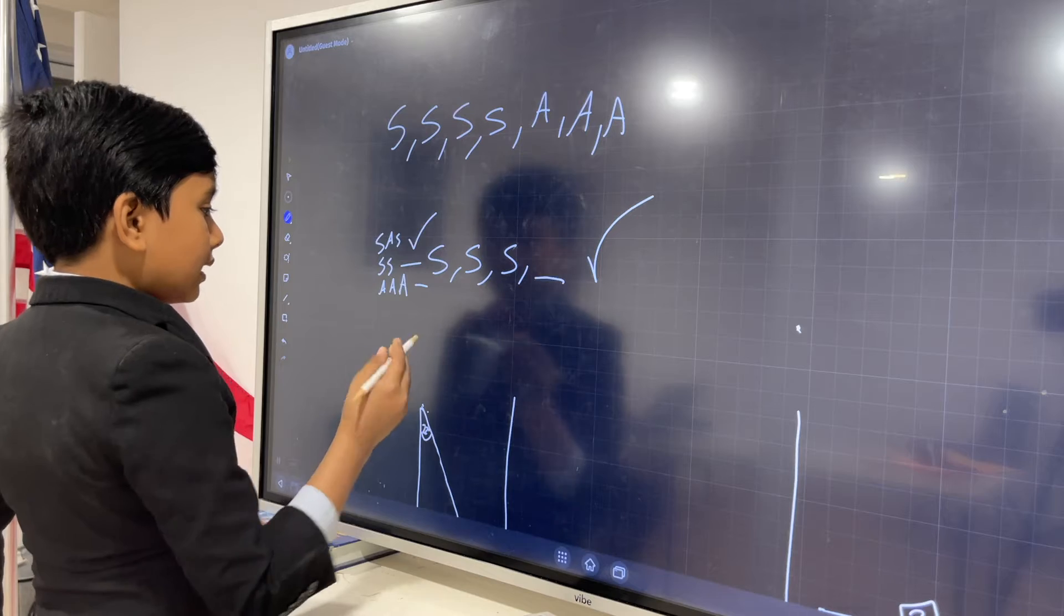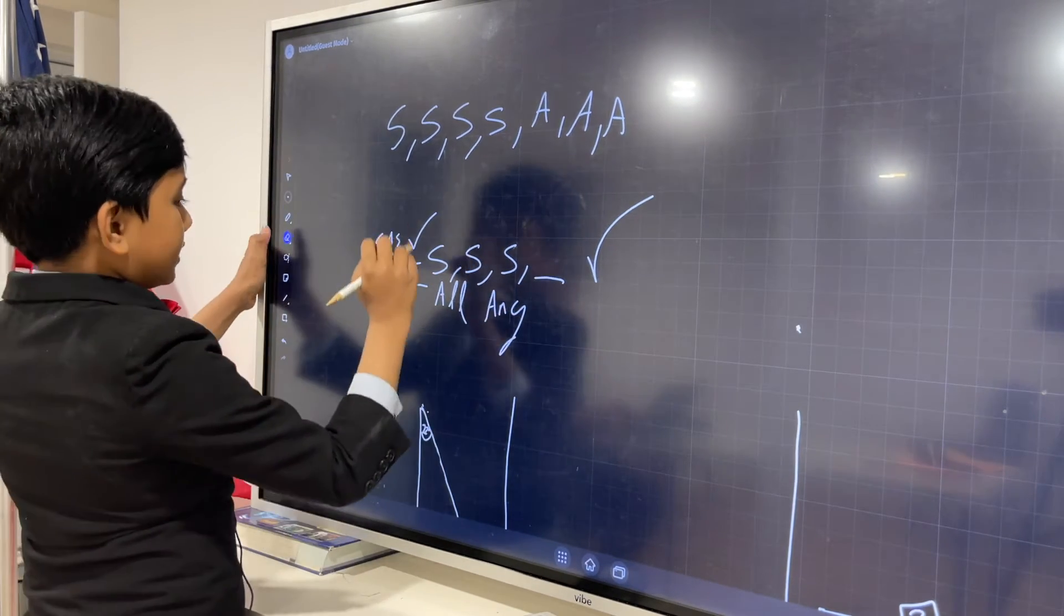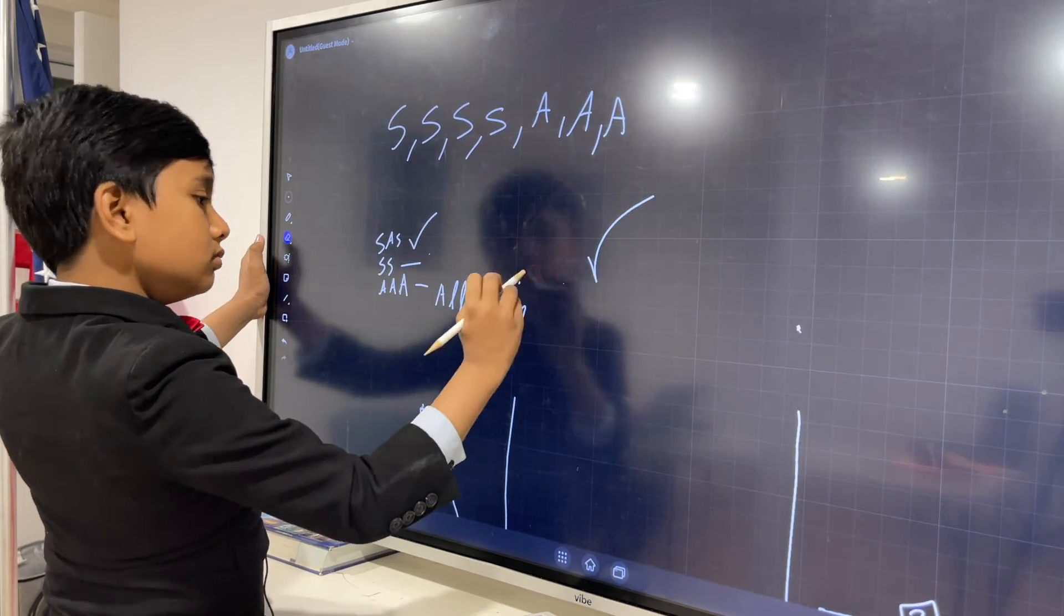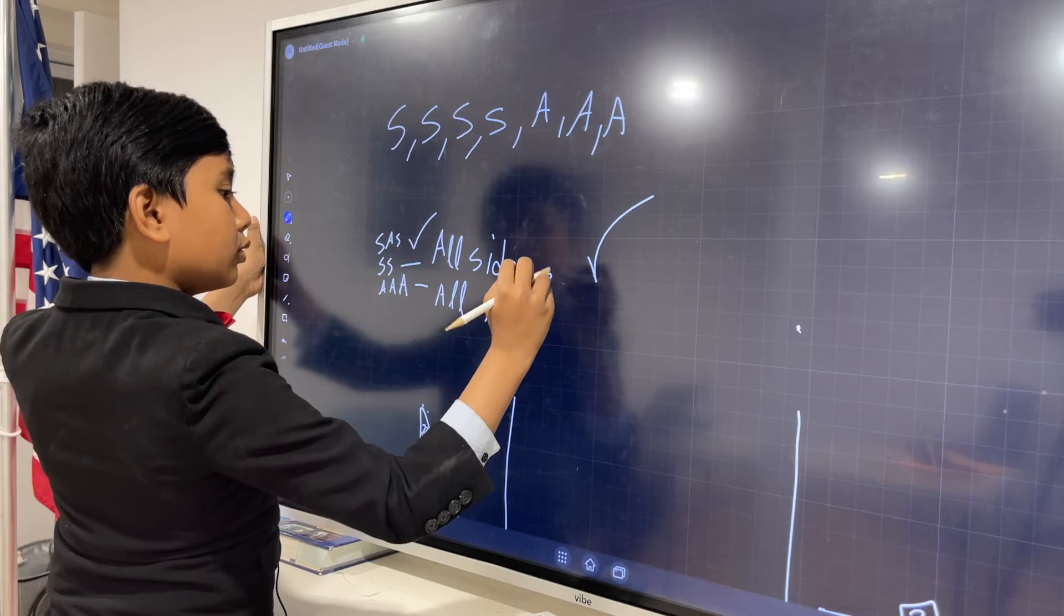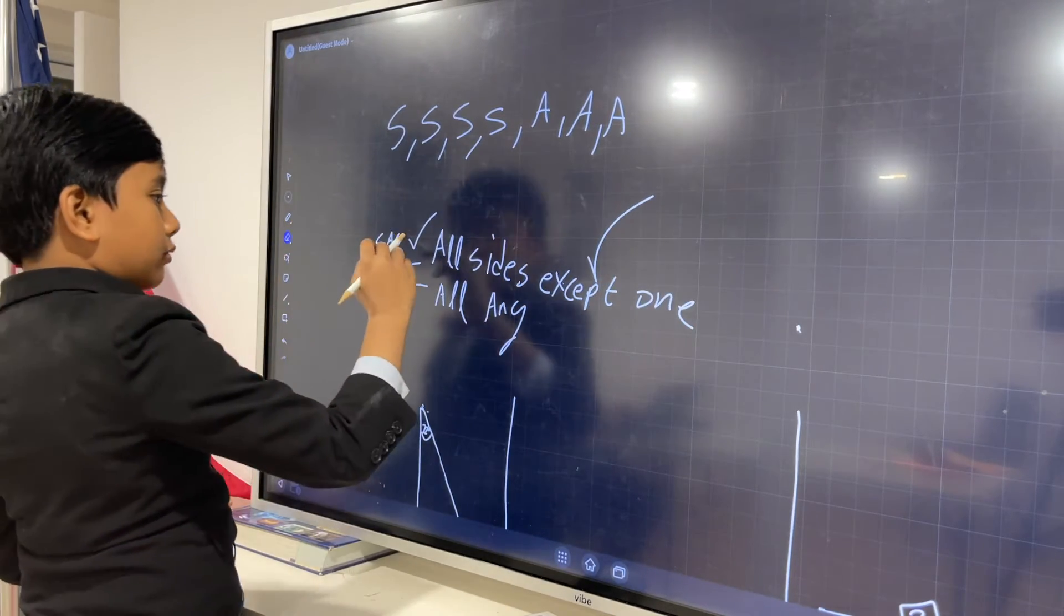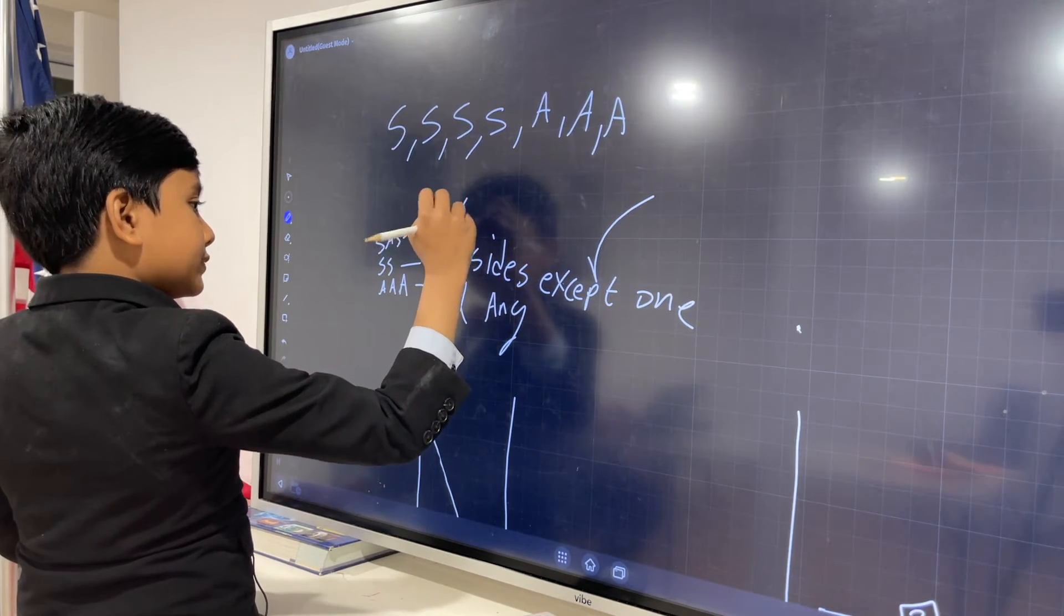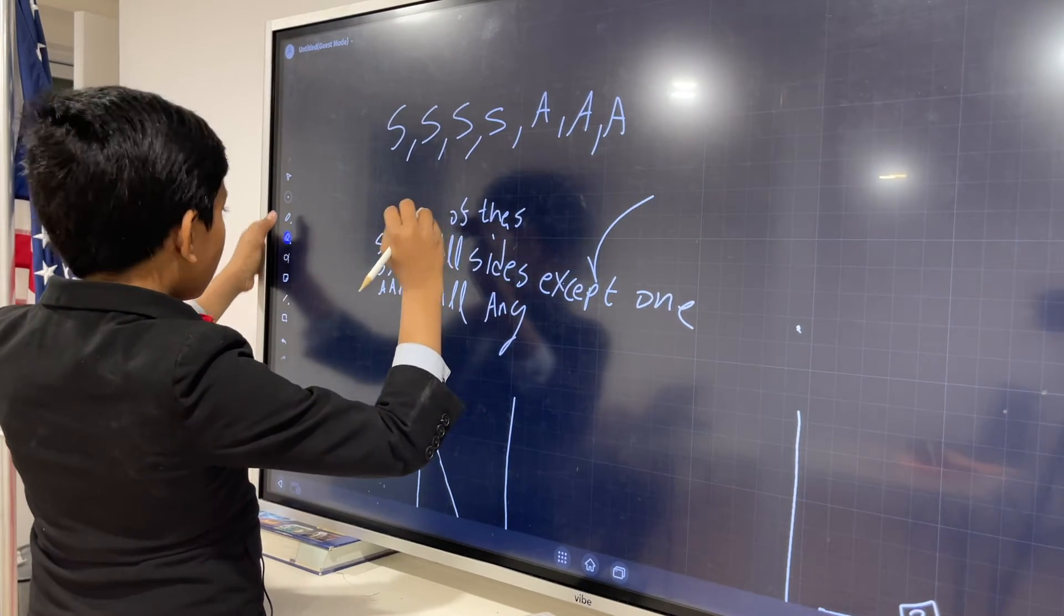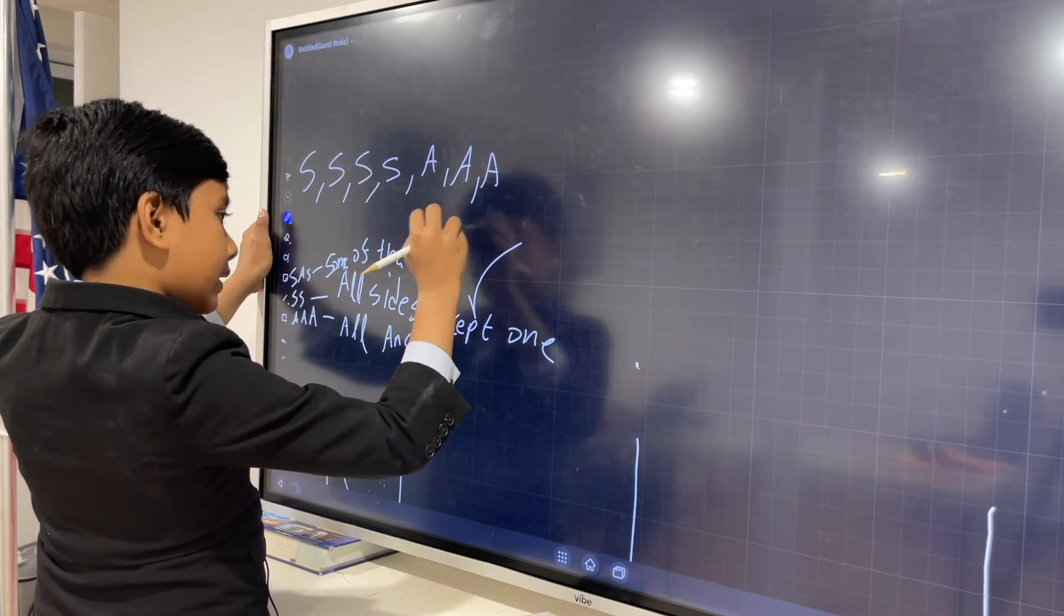Now side-side just means you're getting some amount of the sides, all but one of the sides. And so if those sides are proportional to the other figure's sides, then it's also similar. AAA is angle-angle-angle. So they will give you all angles. I should probably explain SSS more in depth as well, all sides except one.